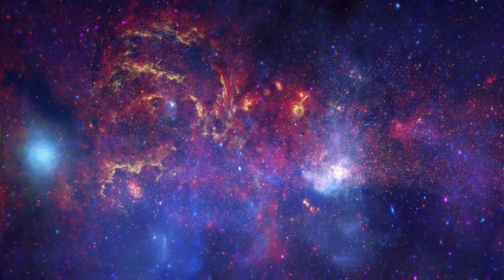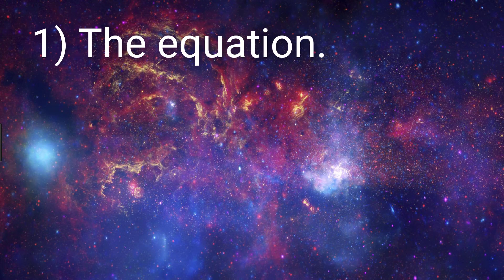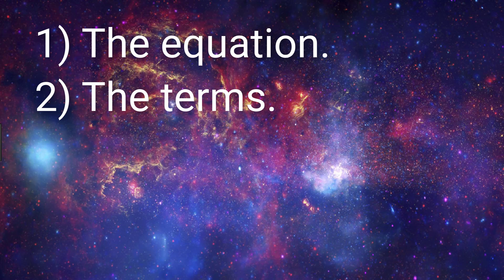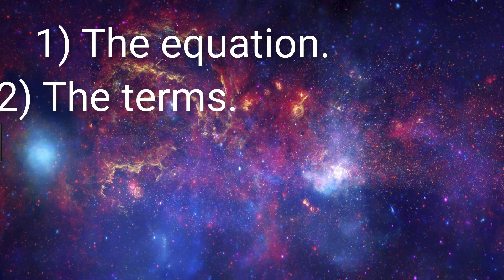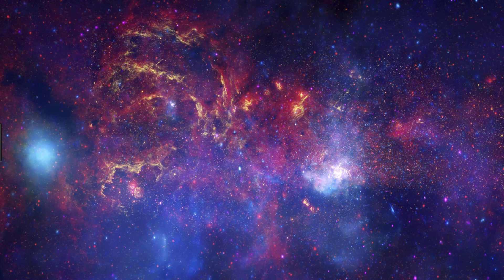We're first going to start out by checking out the equation that backprop uses to differentiate the loss with respect to the weights. We'll see that this equation is made up of multiple terms, so next we'll break down and focus on each of these terms individually. Lastly, we'll take the results from each term and combine them to obtain the final result, which will be the gradient of the loss function.